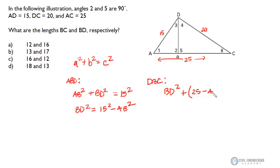And all that's going to equal 20 squared. So we can rearrange this and define it in terms of BD squared and say BD squared is going to equal 20 squared minus 25 minus AB squared.